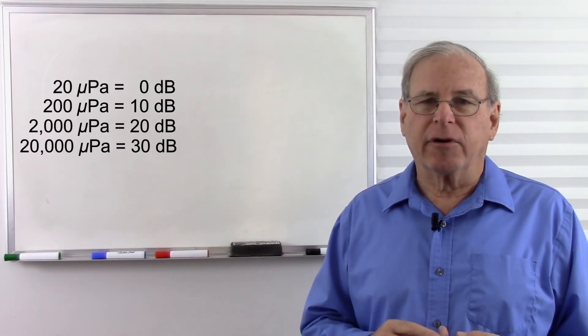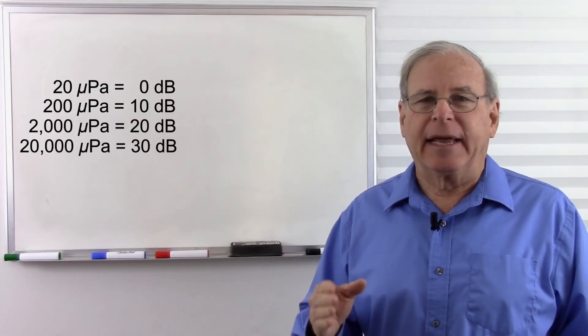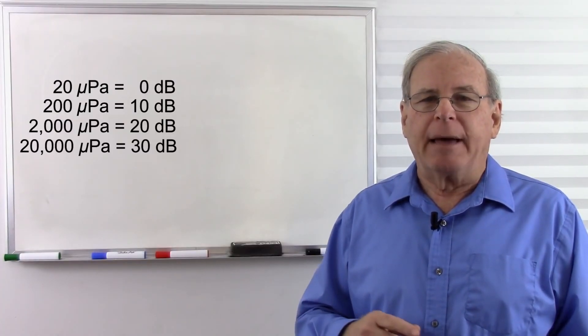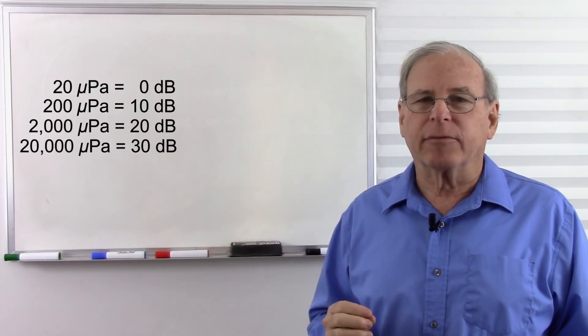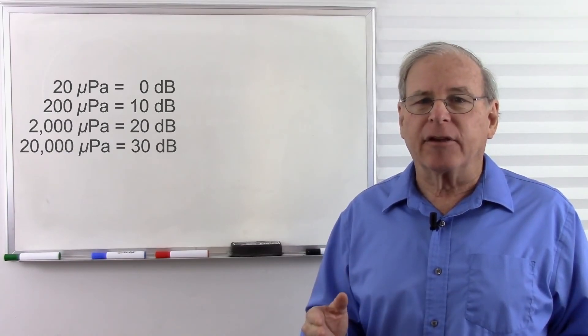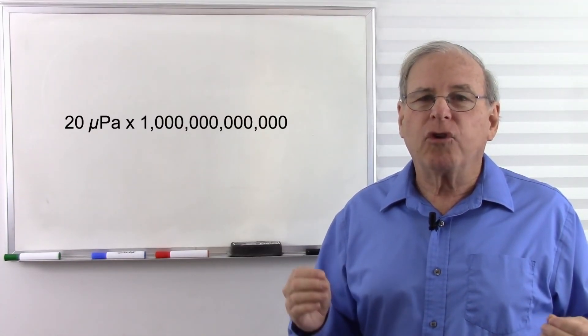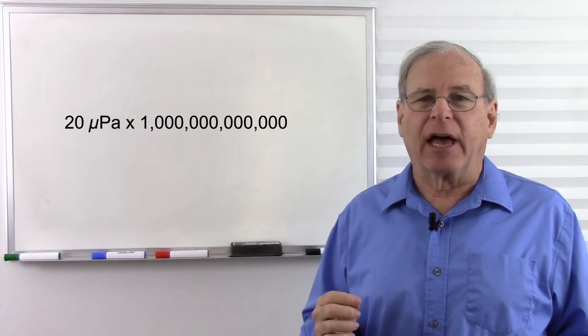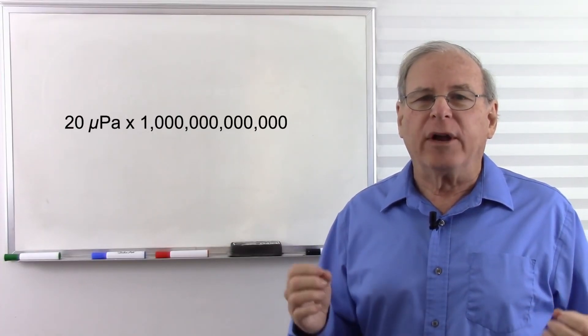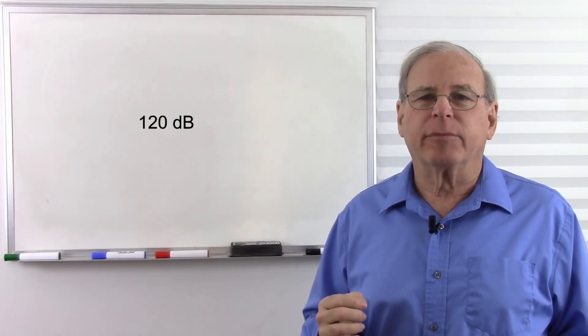So 20 micropascals is zero, multiply that by 10 that's 10 decibels, multiply that by 10 again that's 20 decibels, multiply that by 10 again and that's 30 decibels. Now when we get to the threshold of pain, which is one trillion times 20 micropascals, instead of calling that one trillion something, we call it 120 decibels.